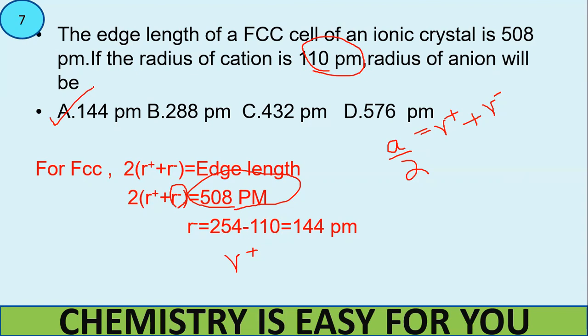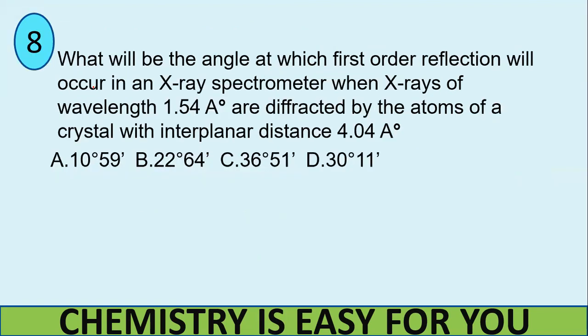So 2 into R+ plus R- would be equal to 508, or we could also write R+ plus R- is equal to A by 2 or 508 by 2 which is 254. Then we already have the radius of the cation as 110. So the radius of the anion or R- is equal to 254 minus 110 which is equal to 144 picometer. Our answer is option A, 144 picometer. You can keep this in mind. I have discussed many of this part in the previous video that I mentioned which you can find in the description box below.